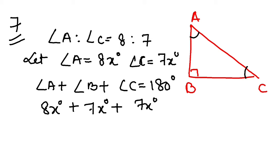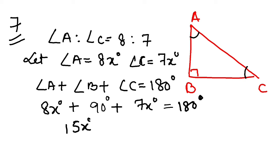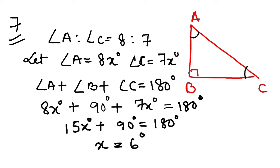Angle B is 90 degrees, not 7x. So 8x plus 7x plus 90 equals 180 degrees. That gives us 15x plus 90 equals 180. From here, x equals 6. So angle A is 8 times 6, which is 48 degrees, and angle C is 7 times 6, which is 42 degrees.